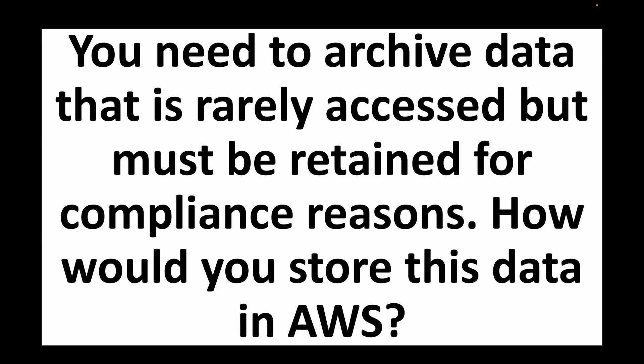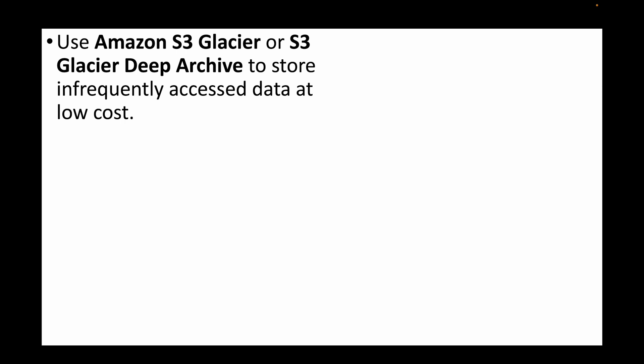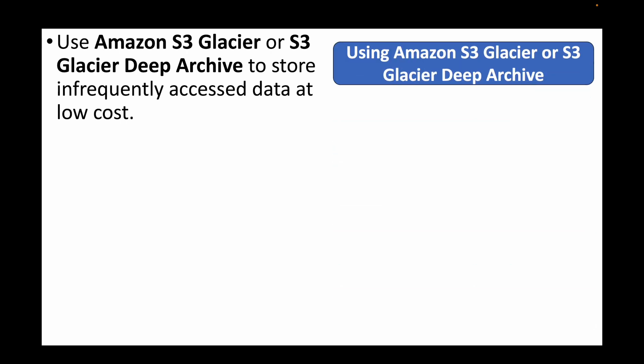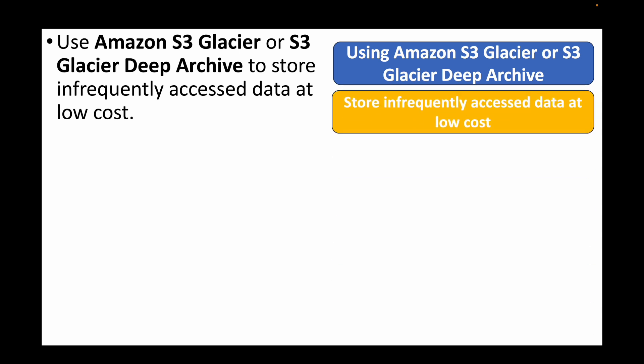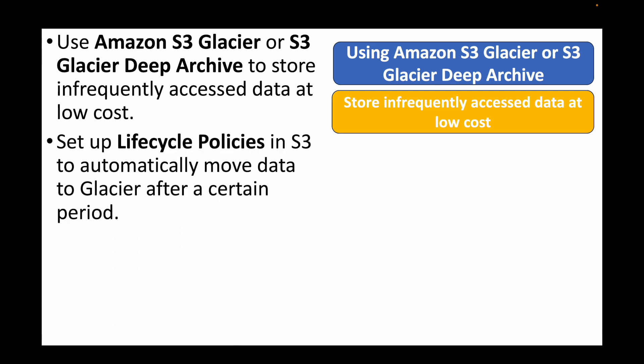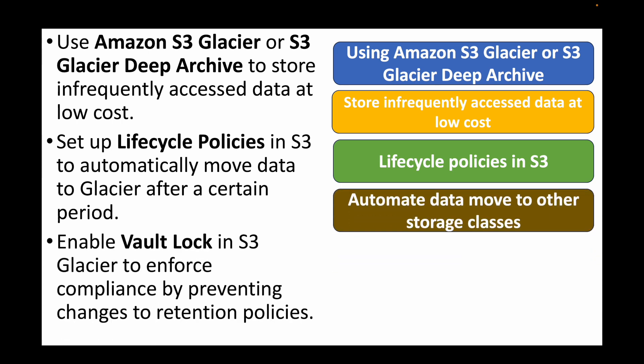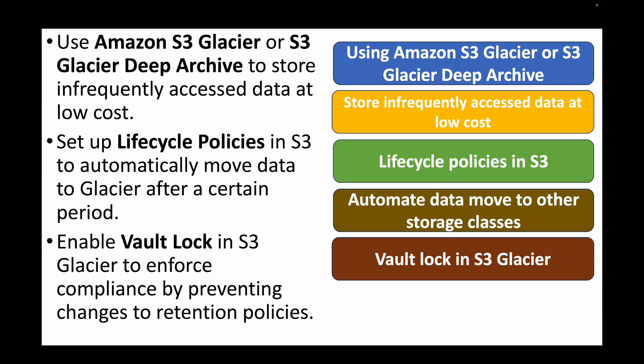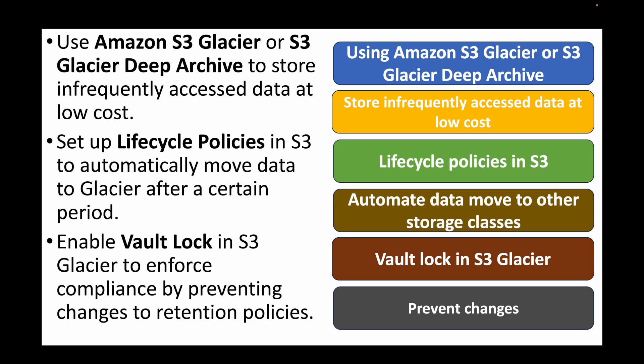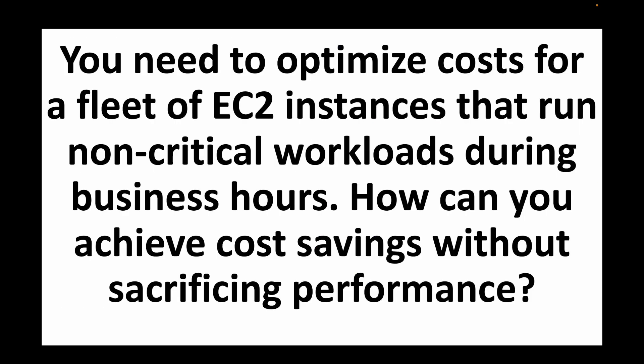The next question is: you need to archive data that is rarely accessed but must be retained for compliance reasons — how would you store this in AWS? We can use S3 Glacier or S3 Glacier Deep Archive to store infrequently accessed data at very low cost. A lifecycle policy can automatically move data from one storage class to another — in this case to Glacier. We can also enable Vault Lock at the Glacier level to enforce compliance and prevent changes to retention policies or accidental deletion of data.